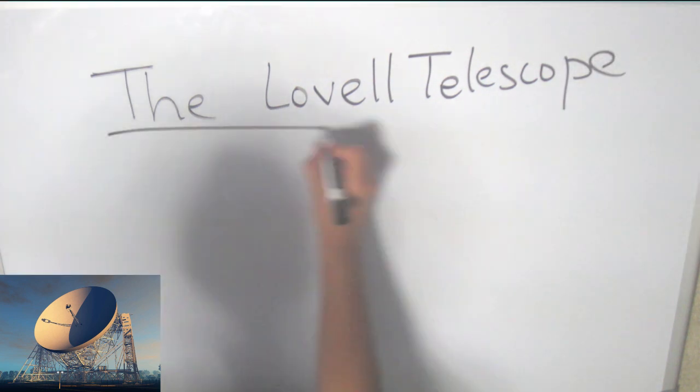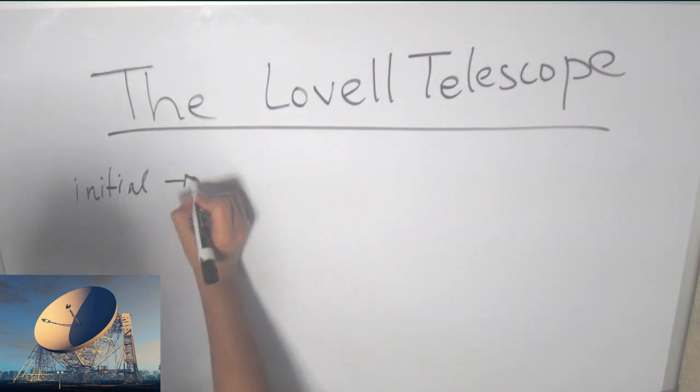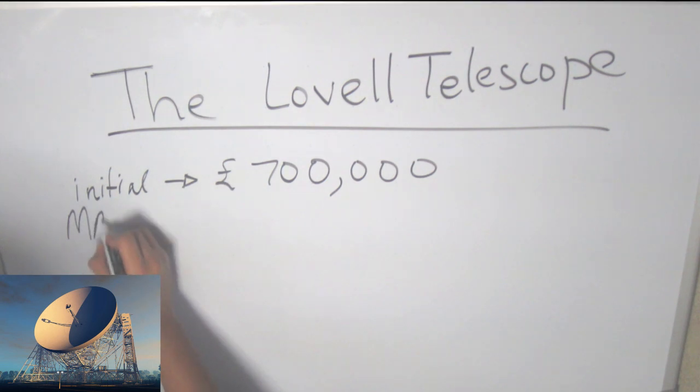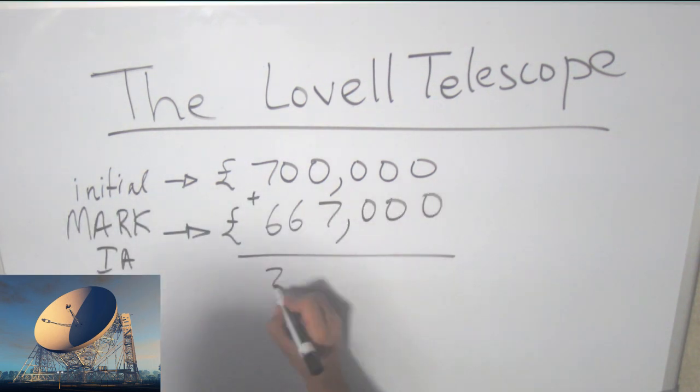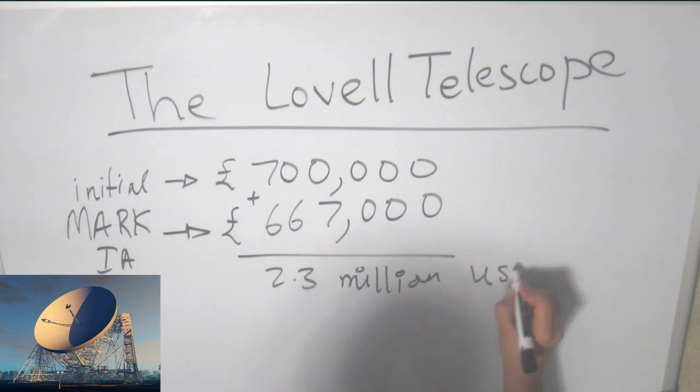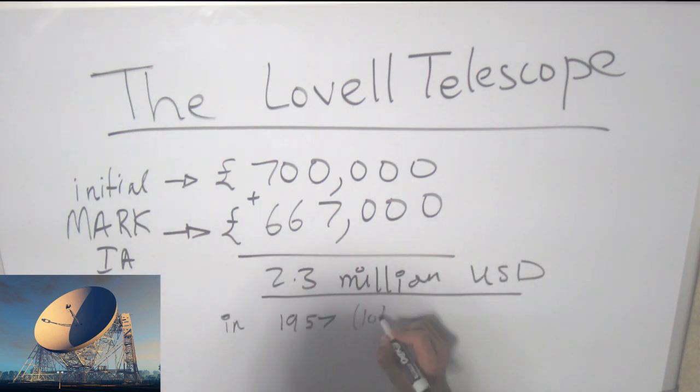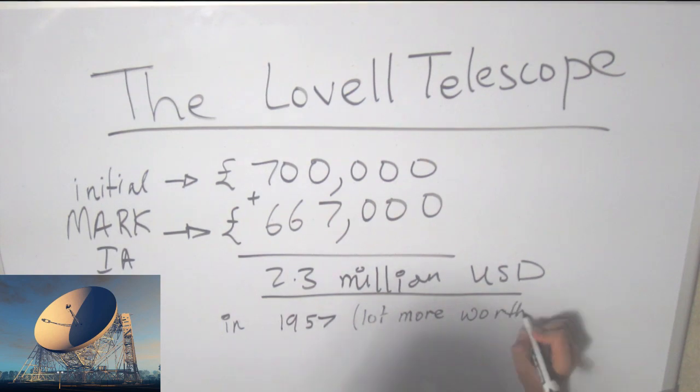The initial cost was 700,000 pounds, and with the other upgrades, such as the Mark IA upgrade which made the surface a lot smoother, the cost was another 667,000 pounds. The total cost is 2.3 million US dollars in 1957, which is worth a lot more right now.